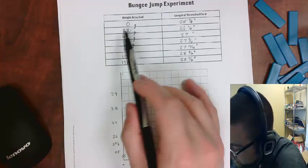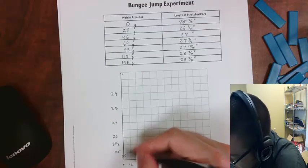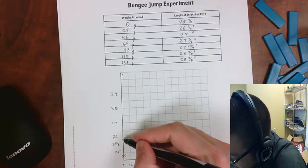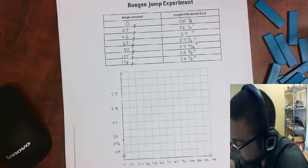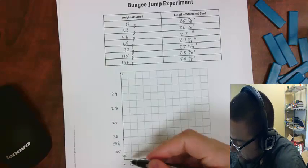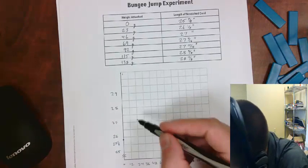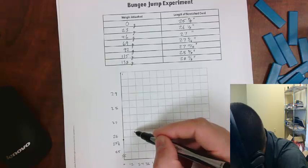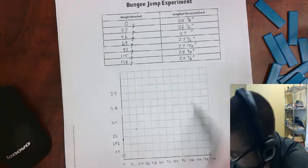So my first point is going to be zero, 25 and 7 eighths, so zero and then 25 and 1 eighth less than 26, so that would be my point right there. And next is 23, 26 and a half, so 26 and a half is this line right here, and then 23 is just a little bit before that line.